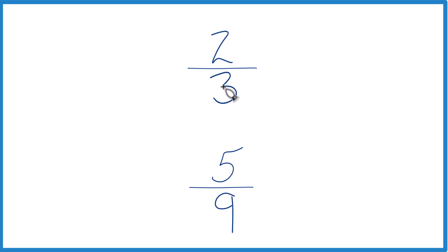First, you could take two divided by three on a calculator, get a decimal, five divided by nine, you get a decimal, and you could tell whether two-thirds is greater than, less than, or equal to five-ninths.